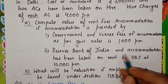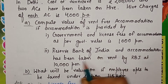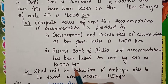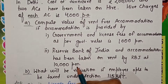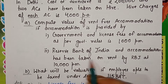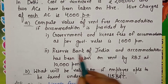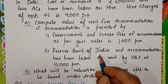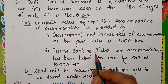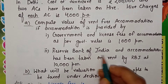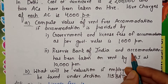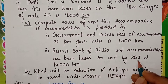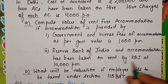He is an employee of RBI, not a government employee. The accommodation has been taken on rent by RBI at 10,000 per month. So we do not consider him in the government employee category; the applicable category here is other employees.